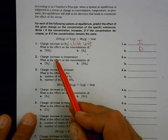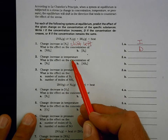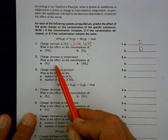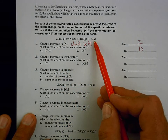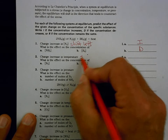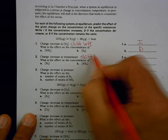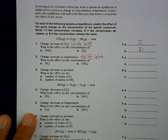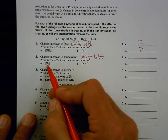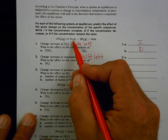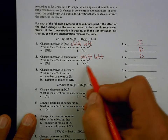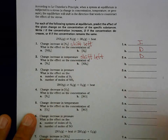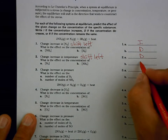Number two: increase in temperature. Again, go away from the increase — heat is the temperature part. We want to go away from the heat side, so this is also a shift left. N₂ is on the right and will decrease; NH₃ is on the left and will increase.